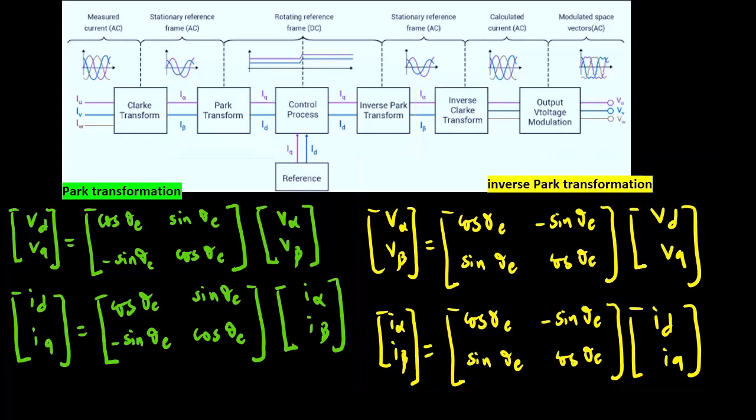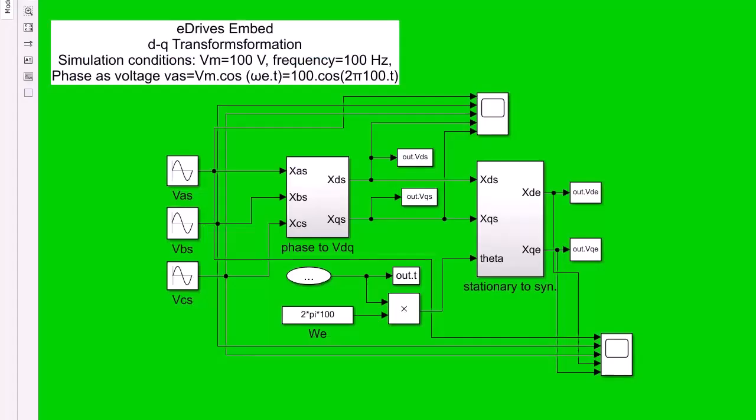What is amazing about the mathematical model in the dq reference frame is that the current and voltage quantities are no longer sinusoidal signals but direct current signals. In other words, when designing a control system in the next videos, the reference signals for the closed loop can be constants or step signals, which is why PI controllers are very common for this class of systems.